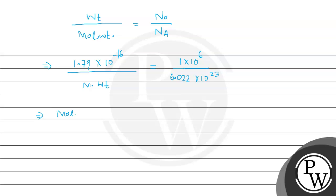So, the molecular weight will be equal to 1.79 × 10⁻¹⁶ multiplied with 6.022 × 10²³ divided by 1 × 10⁶. So it will be 107.7938, aur hum isko likh sakte hai 107.8 gram.